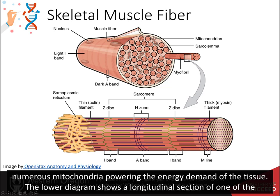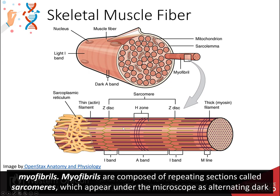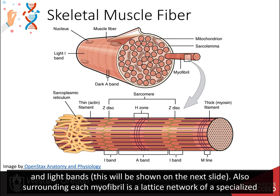The lower diagram shows a longitudinal section of one of the myofibrils. Myofibrils are composed of repeating sections called sarcomeres, which appear under a microscope as alternating dark and light bands.